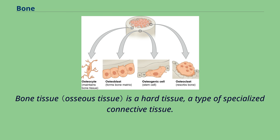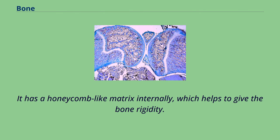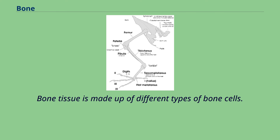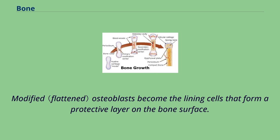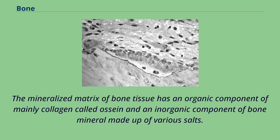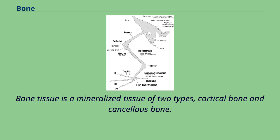Bone tissue is a hard tissue, a type of specialized connective tissue. It has a honeycomb-like matrix internally, which helps to give the bone rigidity. Bone tissue is made up of different types of bone cells. Osteoblasts and osteocytes are involved in the formation and mineralization of bone, while osteoclasts are involved in the resorption of bone tissue. Modified osteoblasts become the lining cells that form a protective layer on the bone surface. The mineralized matrix has an organic component of mainly collagen called ossein, and an inorganic component of bone mineral made up of various salts. Bone tissue is a mineralized tissue of two types: cortical bone and cancellous bone.